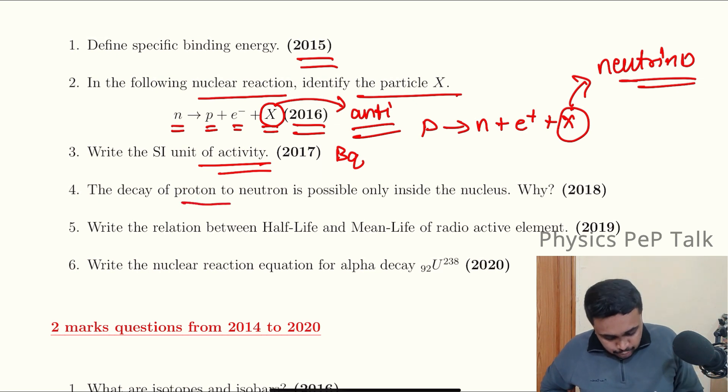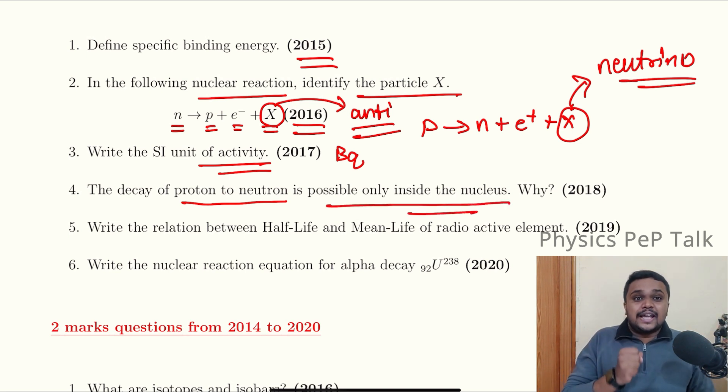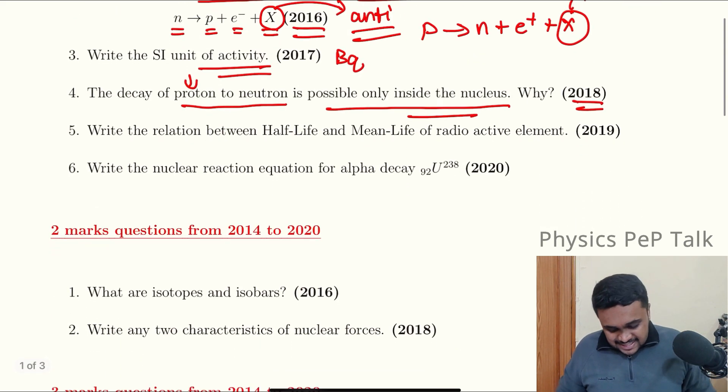The decay of a proton to neutron is possible only inside the nucleus. One proton will convert to one neutron inside the nucleus. The proton has less mass than neutron. To compensate this mass difference, binding energy comes into the picture. Without binding energy in the nucleus, this conversion is not possible. So you can easily score one mark on this.